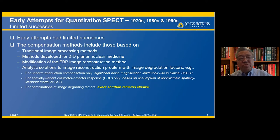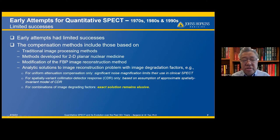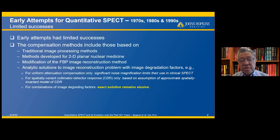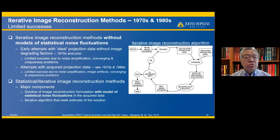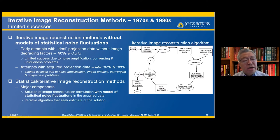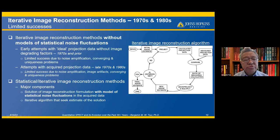Early attempts at quantitative SPECT have been ongoing from the 1970s through the 1990s. These include several methods, and the analytical solution to the image reconstruction problem incorporating image degradation factors remains elusive. Iterative image reconstruction methods were also attempted in the 1970s and 1980s. The first category — iterative reconstruction methods without models of statistical noise fluctuation — are plagued with noise amplification, convergence, and uniqueness problems, so they are not very useful.